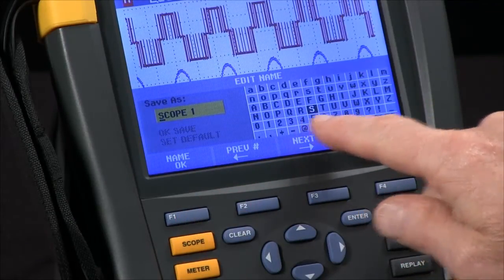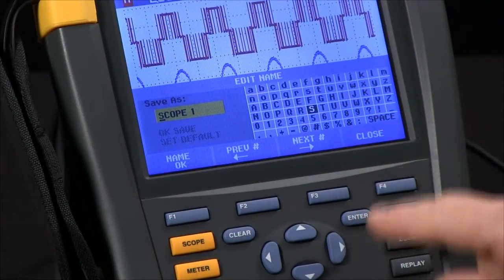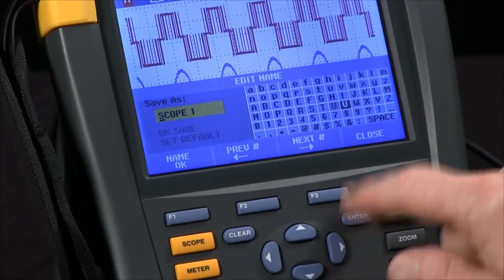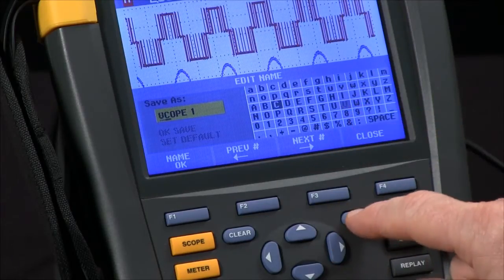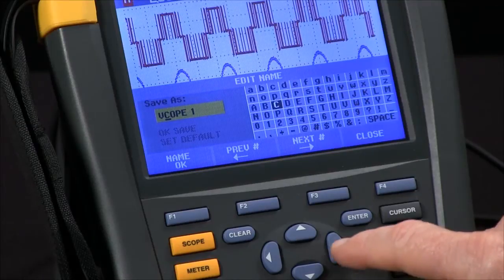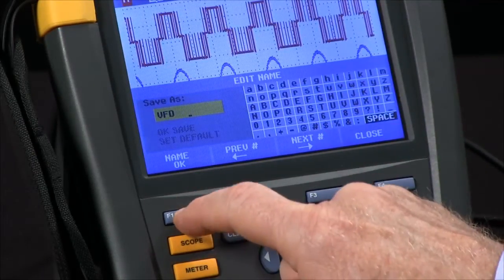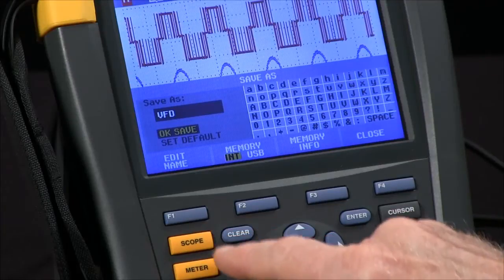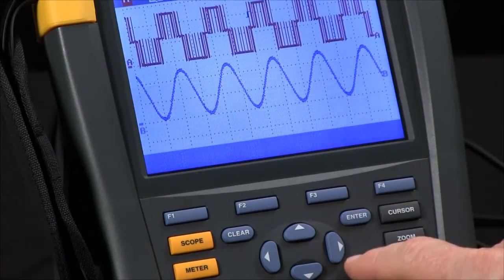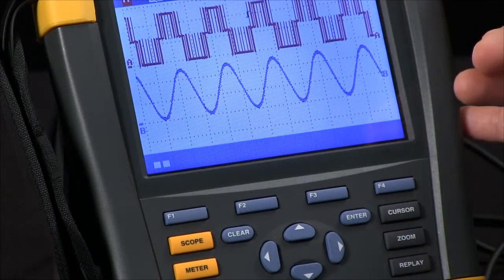Now I can go through with my alphabet here and select different letters, enter V, and then say name OK with F1. Enter to save. I've now saved that setup.